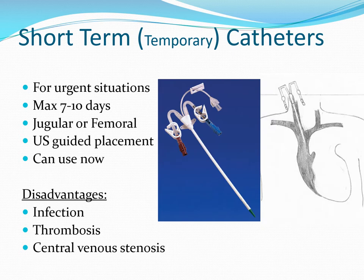Short-term catheters are used in urgent situations and can be in place for about 7 to 10 days. They can be placed via the jugular vein or the femoral vein — ultrasound guidance is needed for placement, though sometimes not necessary — and the catheter can be used right away. This is used in situations like the ICU and emergency department where the patient needs immediate dialysis. Disadvantages include infection, thrombosis, and central line complications.